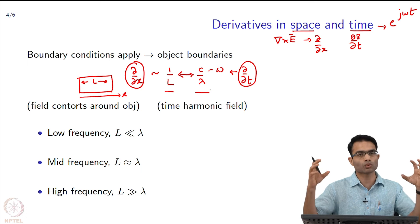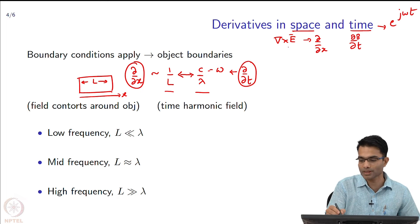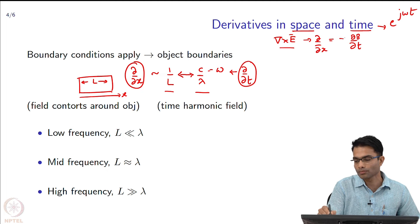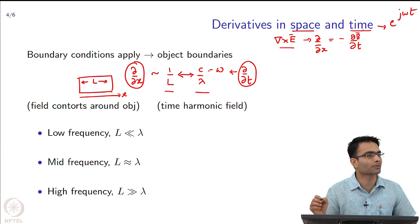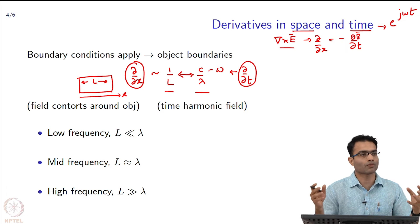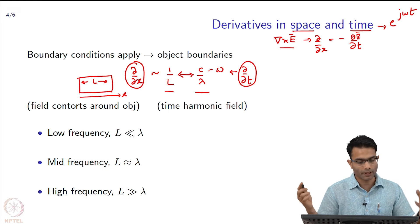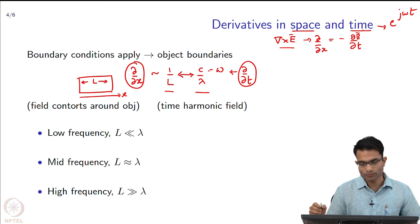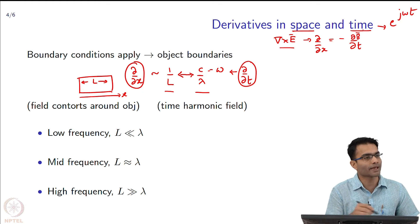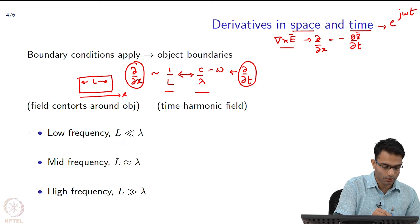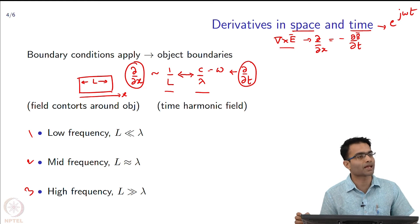So these are the two competing terms: the space derivative proportional to 1/L, and the time derivative proportional to 1/λ. For example, in the equation del cross E = −dB/dt, it is like a tug of war between these two terms. Based on the relative ratio between L and λ, there are three regimes of physics.